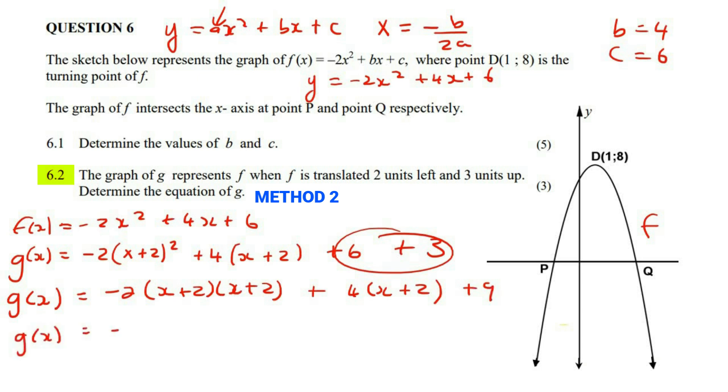And so this becomes g of x is equal to negative two. Now we're going to multiply these two brackets together. So it would eventually become x squared plus four x plus four, and then plus four x plus eight plus nine.